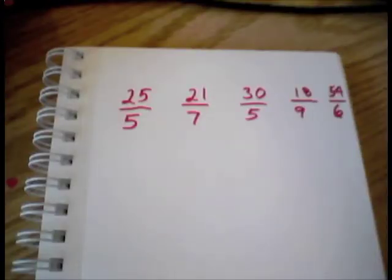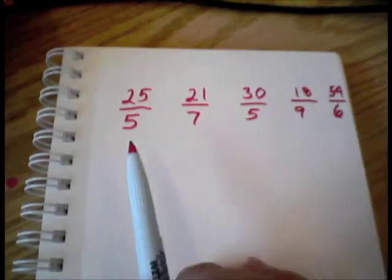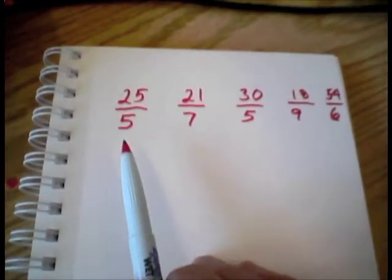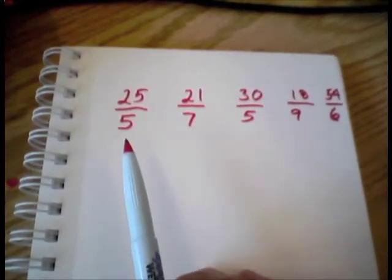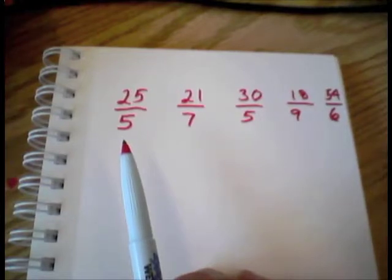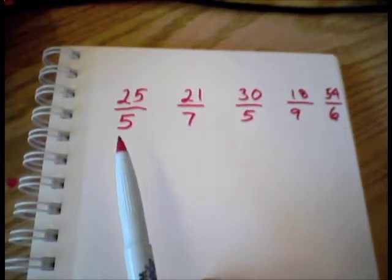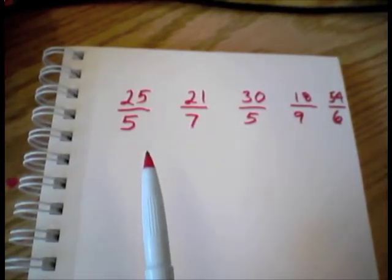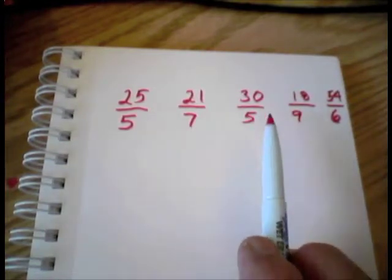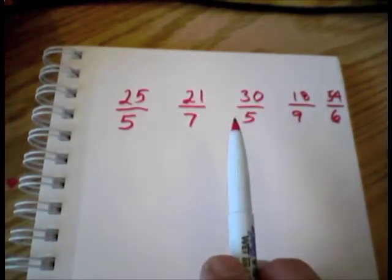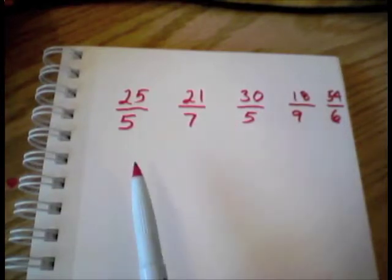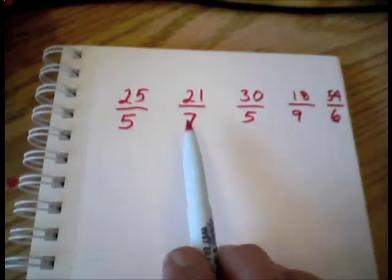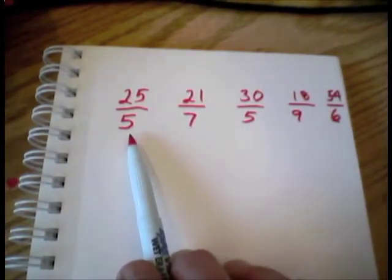All right, so our problem is we need to look at these improper fractions and order them from greatest to least. We have to actually figure out their value compared to each other. Now it would be easy if these were like fractions. Like fractions have common denominators, meaning they have the same denominator. These aren't. These are all improper fractions, and only two of them are like fractions, the fifths.